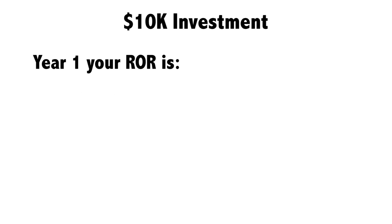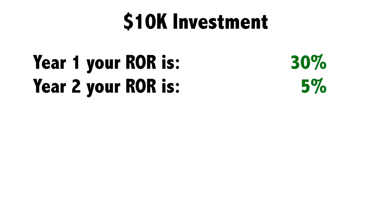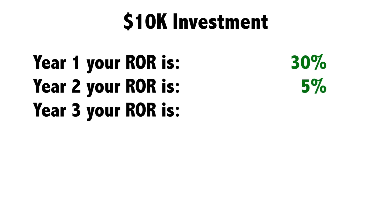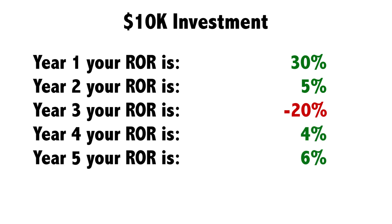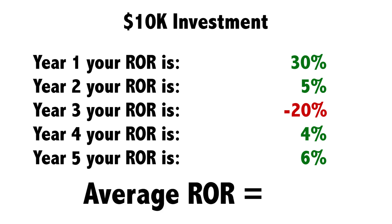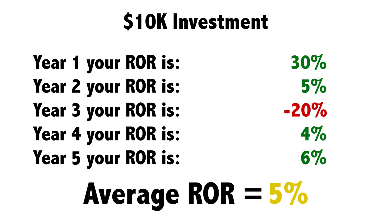Year one, your rate of return is 30%. Year two, your rate of return is 5%. Year three, your rate of return is negative 20%. Year four, your rate of return is 4%. Year five, your rate of return is 6%. The math proves you've earned an average rate of return of 5%, because 30 plus 5 minus 20 plus 4 plus 6 equals 25, divided by 5, equals 5% average rate of return.